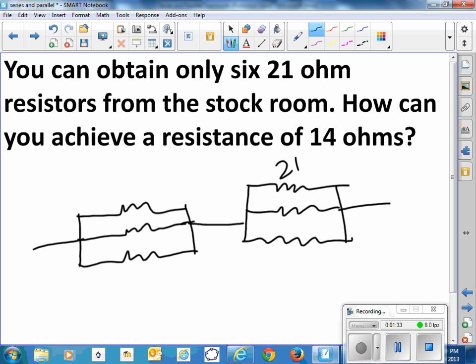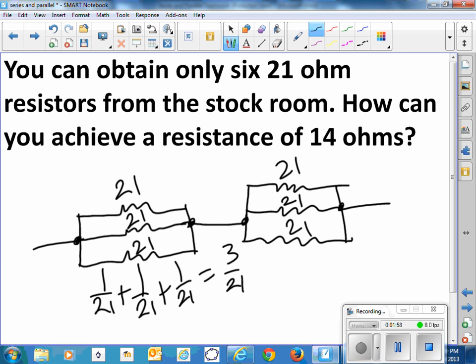And each one of these is 21 ohms. And those three together add like this: one over 21, plus one over 21, plus one over 21, equals three over 21. And then flip it over and I have 21 over 3, which is 7. So that cluster looks like 7 ohms.